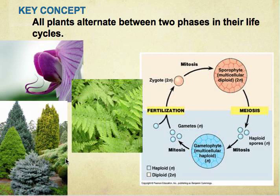Before we move on, I want to make the key concept clear. All plants alternate between two phases in their life cycles. As you can see, I've demonstrated this idea using a diagram. It goes into the process of mitosis, then meiosis, and then fertilization — which is when the sperm and egg are mixed, making a diploid cell. This is known as fertilization.